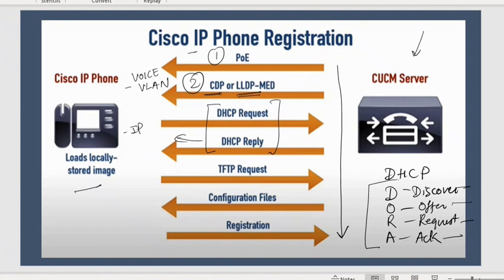Then comes TFTP. Why TFTP? Because now it needs configuration files. For the configuration files, we need a TFTP server. That TFTP server is CUCM. The client sends a TFTP request, and it gets the configuration files in response from the CUCM. So configuration files are done.